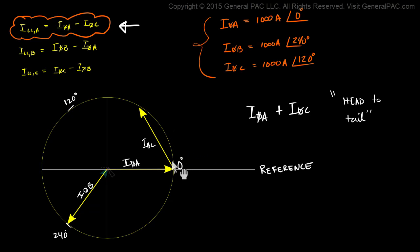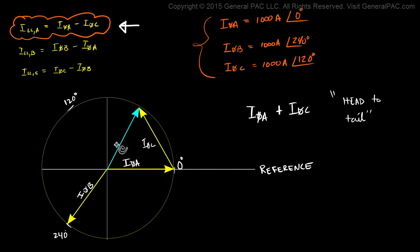The resultant vector starts from the origin and goes towards the head of phase C current. So this right here is our resultant vector, and this resultant vector equals phase A current plus phase C current. However, this is not what we want. What we want to compute is phase A current minus phase C current.